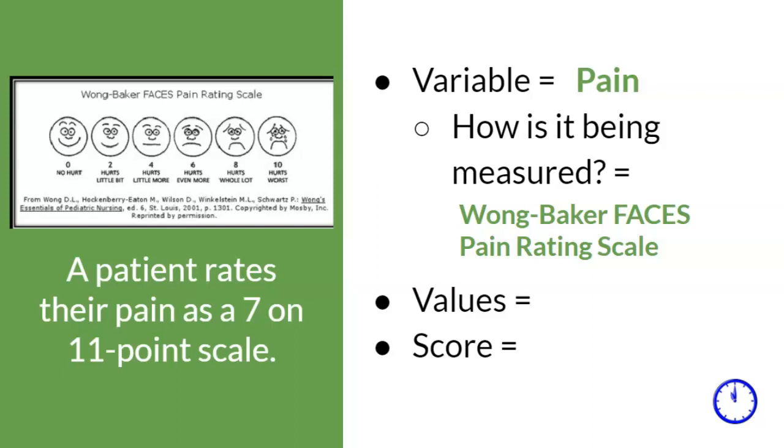According to the rating scale, you can use 0 for no hurts to 10 for hurts worse. The value of 0 counts as a value, so that is why it's considered an 11-point scale. Do not be afraid to use your fingers to count the scale. So let's do it together. 0, 1, 2, 3, 4, 5, 6, 7, 8, 9, 10 gives you 11 different values, or in this case, an 11-point scale.